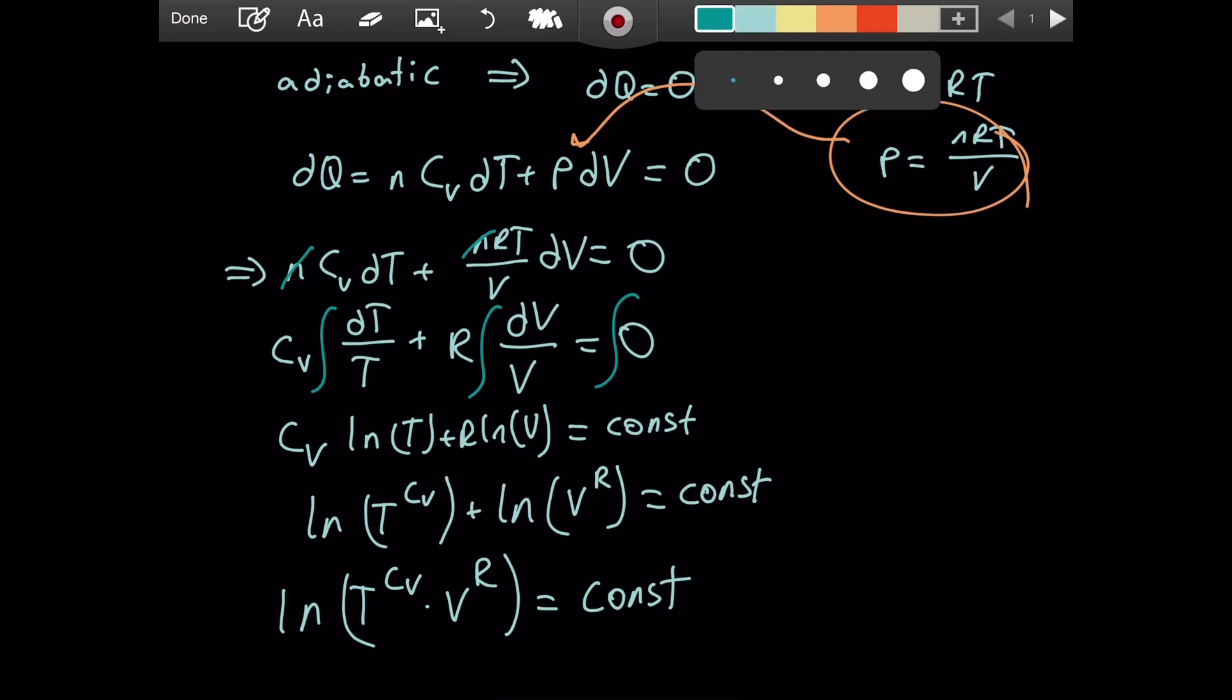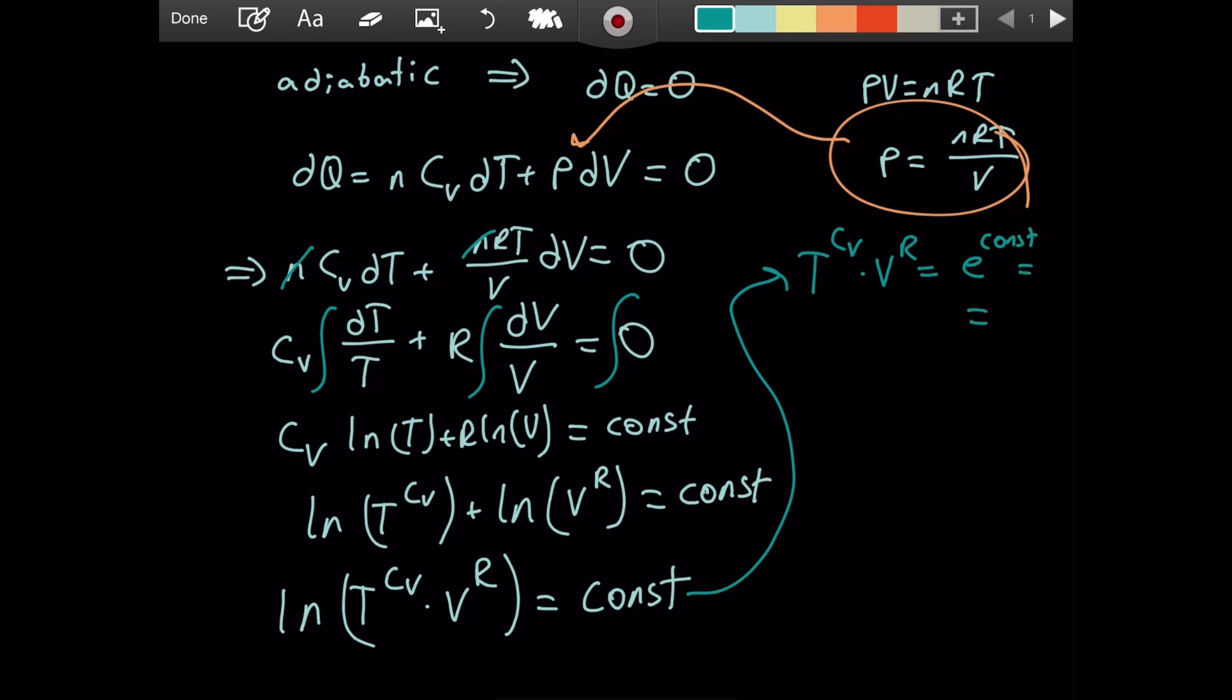At this point, remember this is base e, so by definition this is telling us T to the Cv times V to the R equals e to the power of a constant. We can call this another constant, and I write it with a capital C because there are different constants.